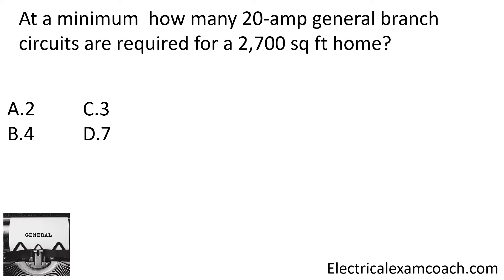At a minimum, how many 20 amp general branch circuits are required for a 2,700 square foot home? Your question may not say 'general' — it may say 'for lighting and receptacles.' But usually if they give you the square feet, that's the red flag that you're calculating the general branch circuits. The first step is to take our 2,700 square feet and multiply it by 3 VAs per square foot, like we've learned previously in the program. That's going to end up with 8,100 VAs.